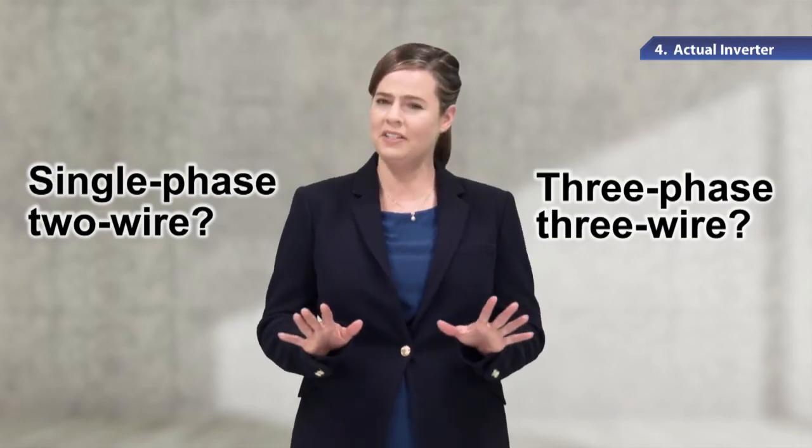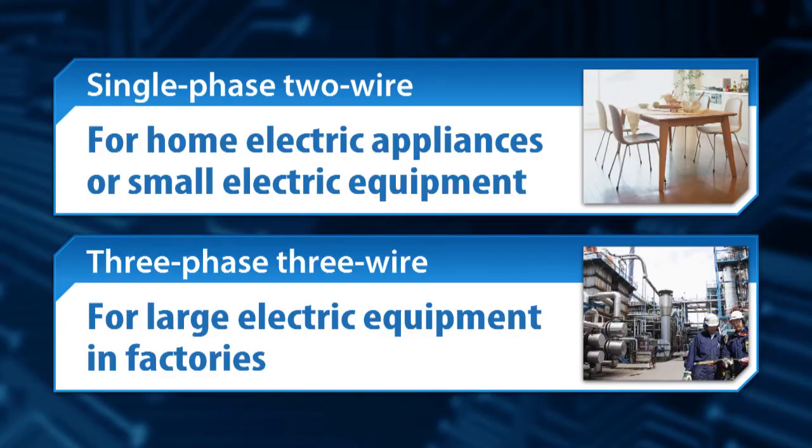These terms may not sound familiar. Single-phase, two-wire system electric power is used for home electric appliances and small electric equipment. Three-phase, three-wire system electric power is for large electric equipment in factories.